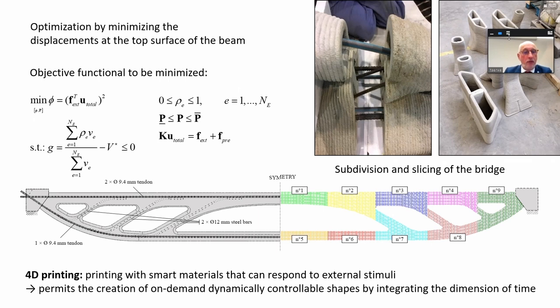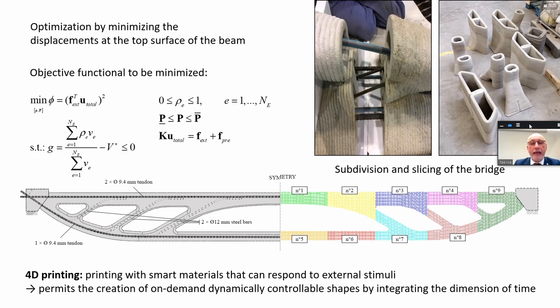Future evolution is 4D printing — that is, printing with smart materials that can respond to external stimuli. This permits the creation of on-demand dynamically controllable shapes by integrating the dimension of time.